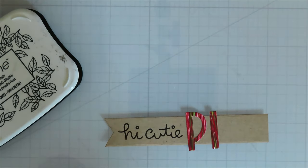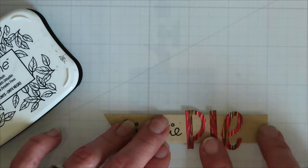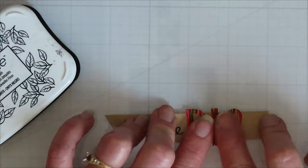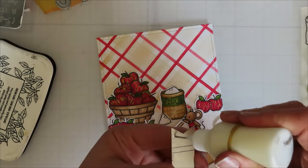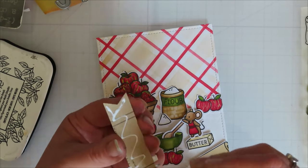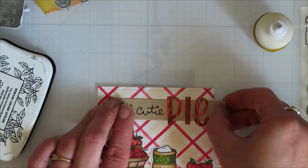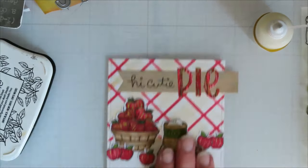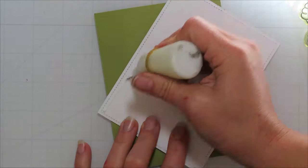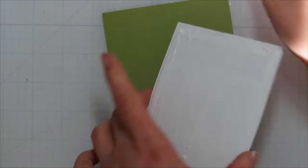So I will put them on there. I did stamp my Hi Cutie, selectively inking it with Versafine Onyx Black ink. And once I am happy with that, I will bring that in and glue that on, just leaving it flat onto my card front here. And then trim off the overhang there.